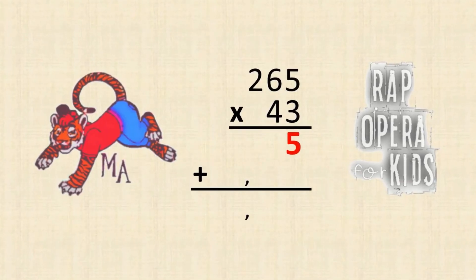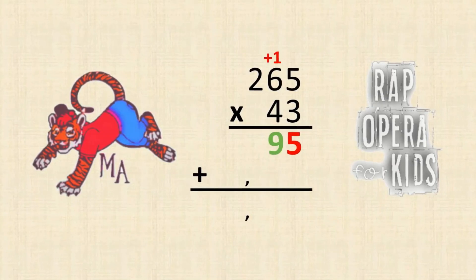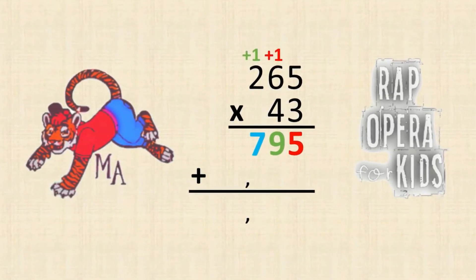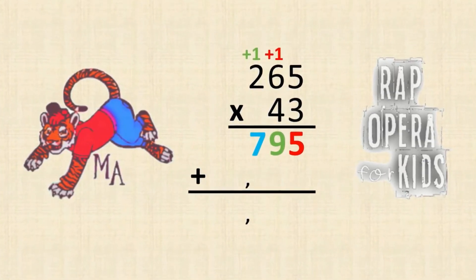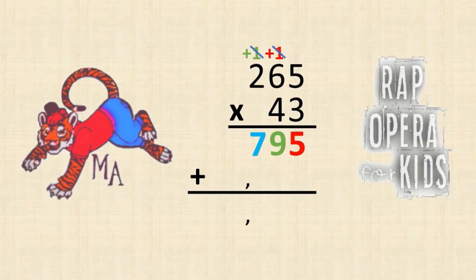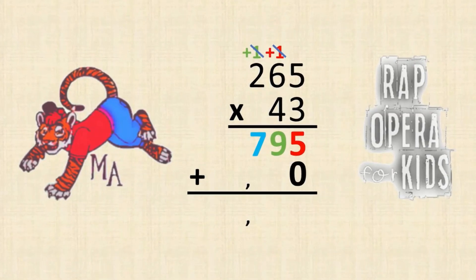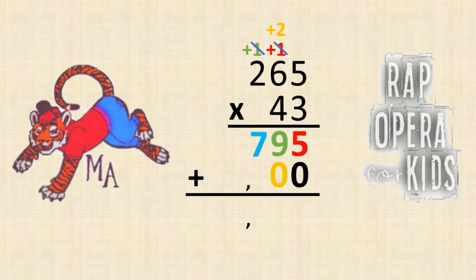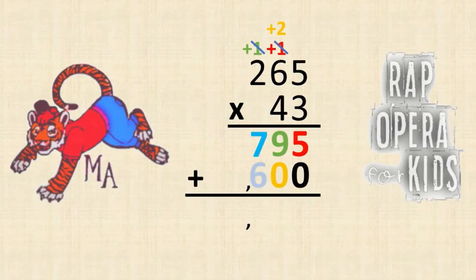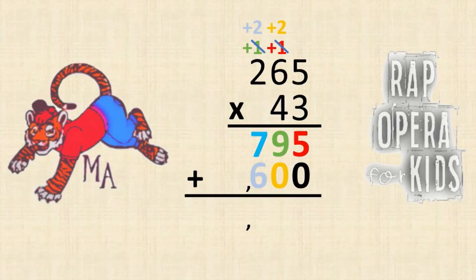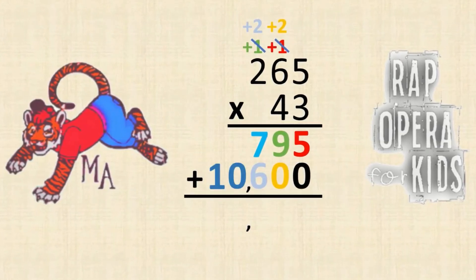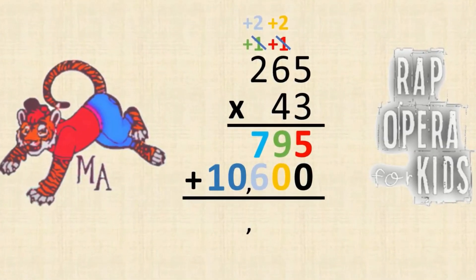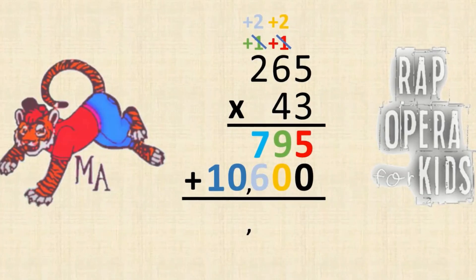Ones to ones, regroup if you need to. Ones to tens, regroup if you need to. Ones to hundreds, regroup if you need to. Keep going till the end, add the zero. Tens to ones, regroup if you need to. Tens to tens, regroup if you need to. Tens to hundreds, regroup if you need to. Keep going till the end, add the zero.